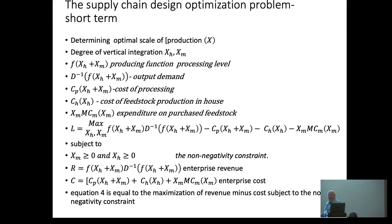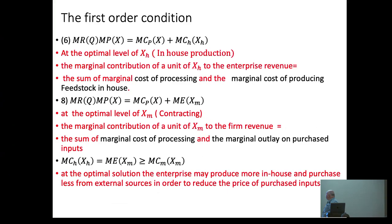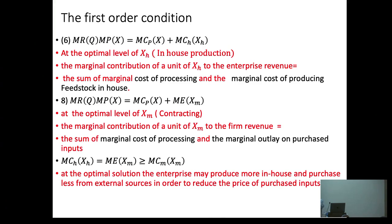Generally, you have revenue minus processing cost minus the cost of in-house production minus the cost of buying from others. The first-order conditions tell you that marginal revenue equals marginal processing cost plus the marginal cost inside. What happens is that every time you buy from others you have some monopsonistic power, and every time you produce something yourself you produce more because you only take marginal cost, not marginal expenditure.